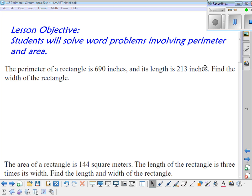So this first problem, we have the perimeter of a rectangle is 690 inches, and its length is 213 inches. Find the width of the rectangle.